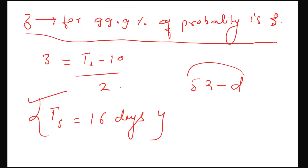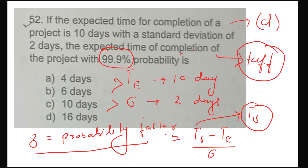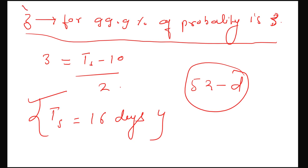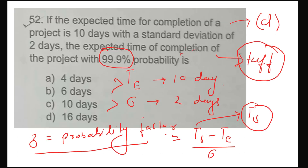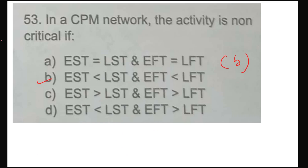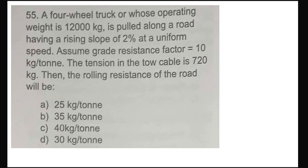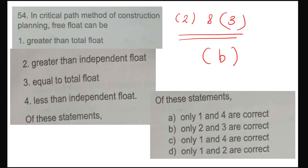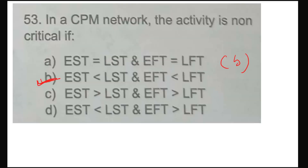Confirming question 52, option D. Though the question was tough, it was solved using a simple formula — the difficulty was in identifying the probability factor from the table corresponding to 99.9% completion. This type was not expected at the OSSC level, but it appeared. Question 53: the correct answer is option B.